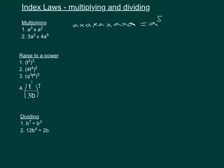For the second one we have 3 times a times a, and then we're multiplying that by 4 times a times a times a times a. When we multiply the 3 and the 4 together that gives us 12, and if we multiply all the a's together that gives us a to the power of 7.